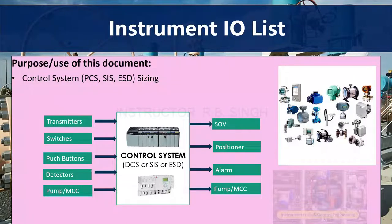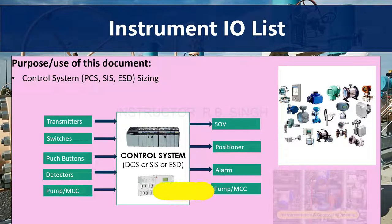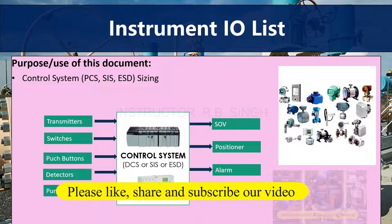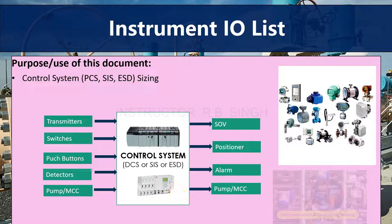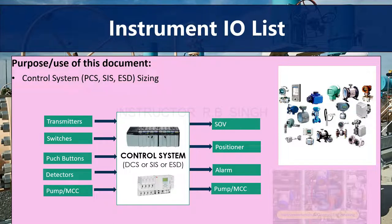Regarding the purpose and use of this document: our complete plant will be controlled by a control system — either PCS (Process Control System), SIS (Safety Instrumented System), or ESD (Emergency Shutdown System). Whenever we do the sizing of the control system, the IO List will be required. Without the IO List, we cannot size the control system. For example, to calculate the number of IO cards — for AI, AO, DI, and DO signals — we need the IO List, as IO cards have different capacities.